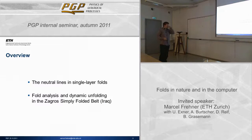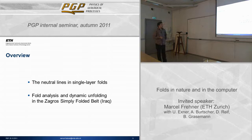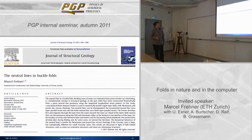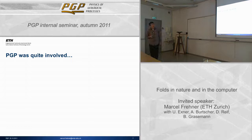My talk will consist of two parts. The first is a more theoretical study about single-layer folds, where I particularly look at what we call the neutral line in a single-layer fold. The second part is more applied and includes field work in northern Iraq in the simply folded belt, with both numerical and field-based analysis. The first part was just recently published in the Journal of Structural Geology, and PGP was quite involved.